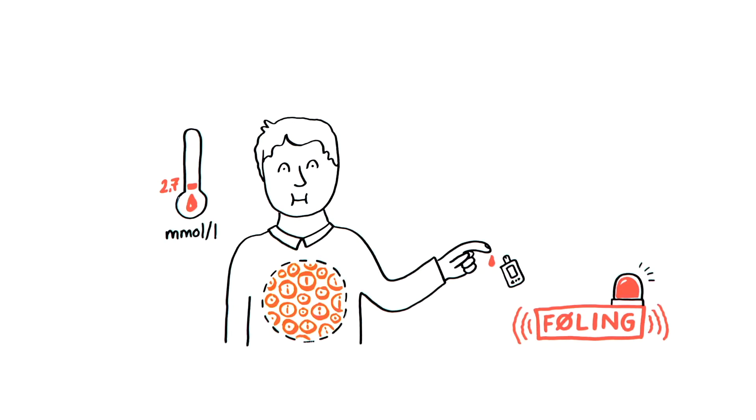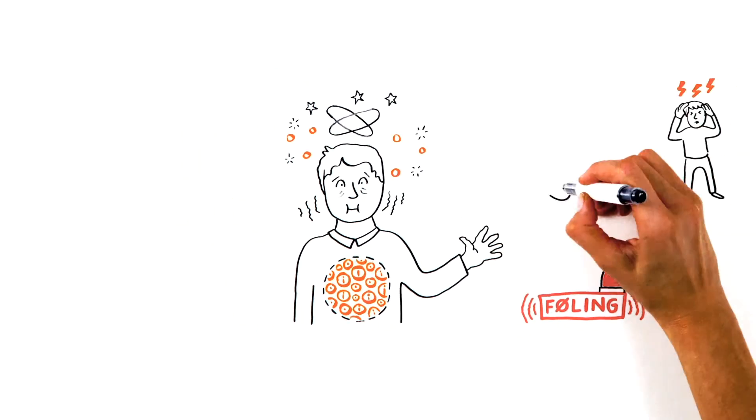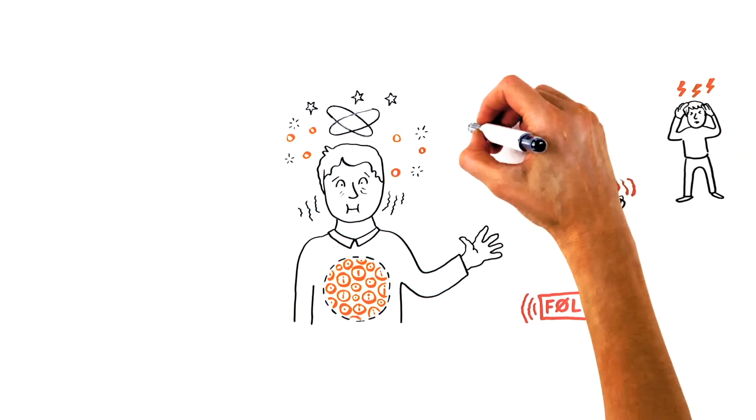A hypo may make you nauseous, dizzy, shaky, see double, break out in a cold sweat, become pale, and experience mood changes. The symptoms vary from one person to the next and may also change over time.